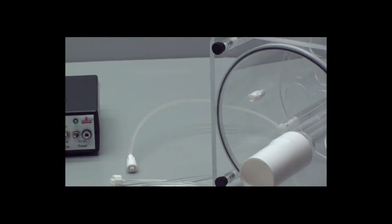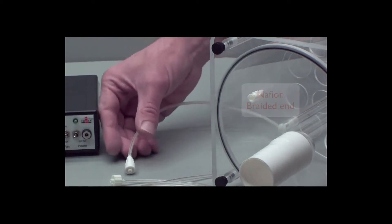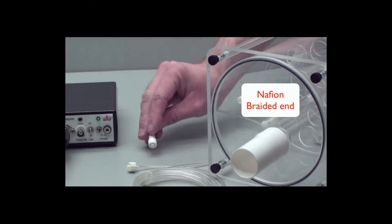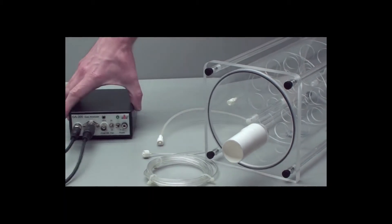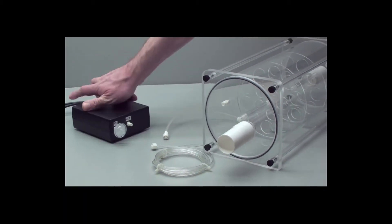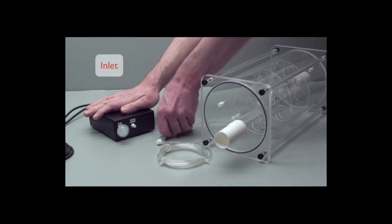With the Nafion clear tubing, find the braided end, and that goes into the inlet of the gas analyzer on the back side.